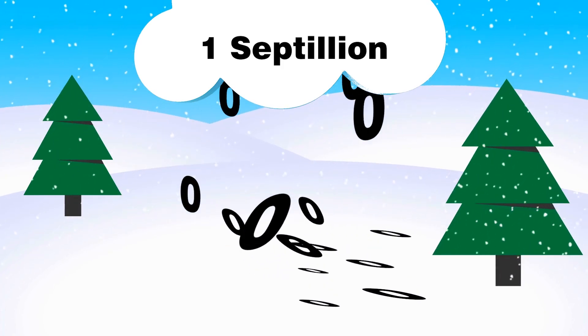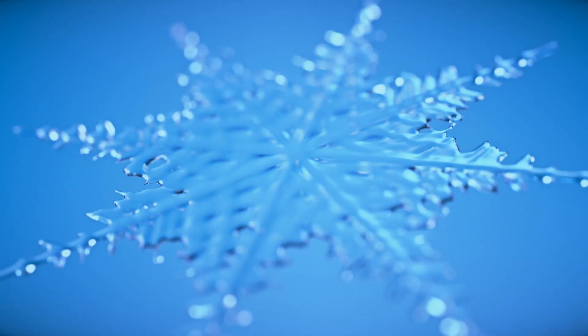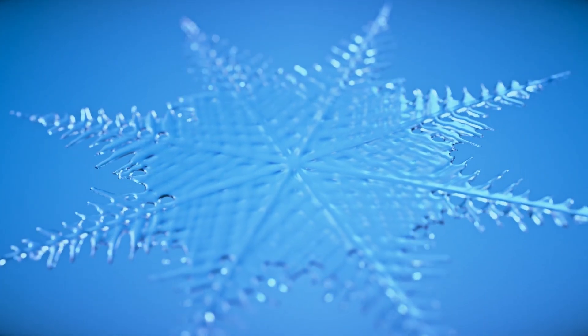That's a big number, with 24 zeros in it. The reason each snowflake is unique is because a snow crystal's shape is determined by the precise path it took falling to the ground. Flakes form in clouds when water vapor freezes onto a pollen or dust particle and becomes an ice crystal.